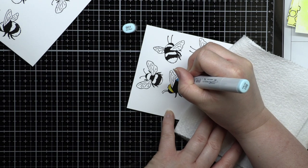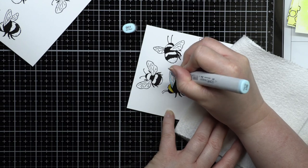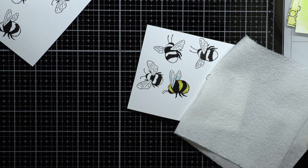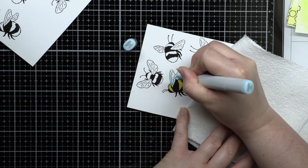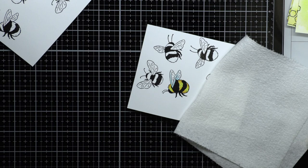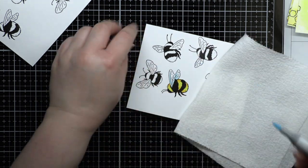Next I use B01, B0000, and B000 on the wings. I want to keep the wings looking a little transparent and glass-like. So I just add a tiny bit of the light blue shading to the areas of the wings that are closest to the bee's body. After I color all my bees, I die cut them with the coordinating dies.